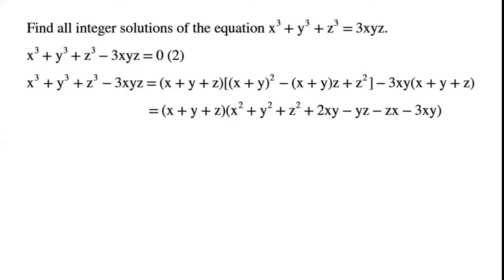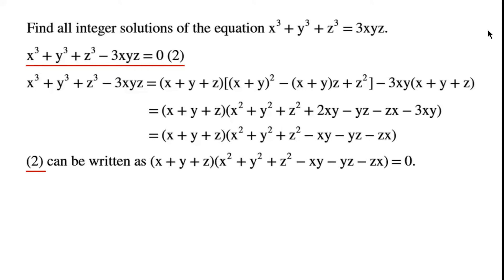We can now write minus xy minus yz minus zx minus 3xy. By collecting like terms, we can write 2xy minus 3xy as minus xy. Equation 2 can be written as (x plus y plus z) times (x squared plus y squared plus z squared minus xy minus yz minus zx) equals 0.